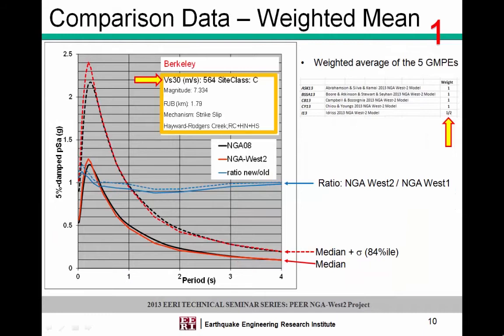The first set of comparisons uses the weighted average. I followed the same weighting criteria that USGS uses — assigning a weight factor of one to the first four ground motion prediction equations and a half to the Idriss equation, normalized to add up to one. In the plots, I'm showing spectral response as a function of period for the median and median plus one standard deviation. The blue line shows the ratio, quantifying whether we're increasing above one or decreasing below one depending on site conditions.